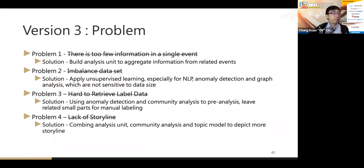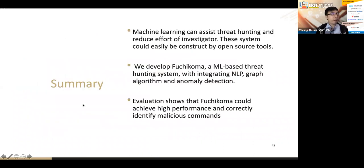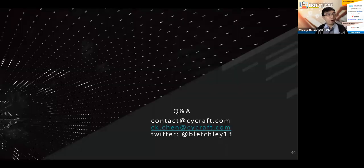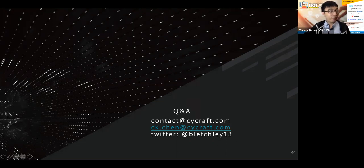To summarize: we introduced three versions that solve the four problems identified initially. Machine learning can assist threat hunting and reduce analyst effort. This system can be constructed using open source tools, though tuning and adding more data sources takes time. We demonstrated Fuchicoma, a machine learning-based threat hunting system, showing how we solved problems and improved performance with each version. Evaluation shows Fuchicoma achieves high performance and can help identify malicious commands. Feel free to reach out via Twitter or email with any questions. Thank you everyone.